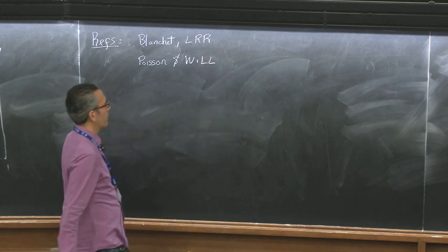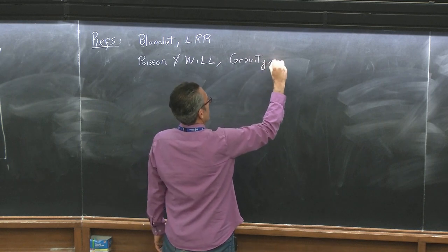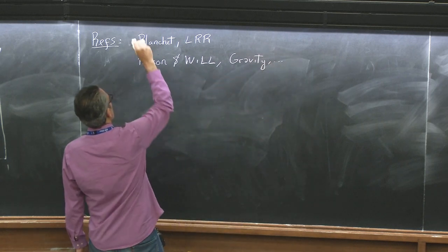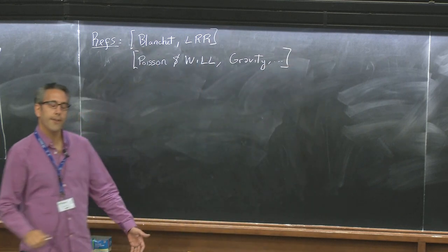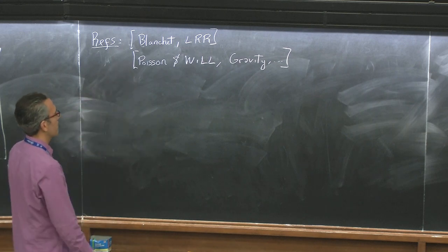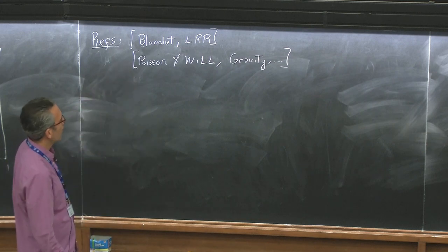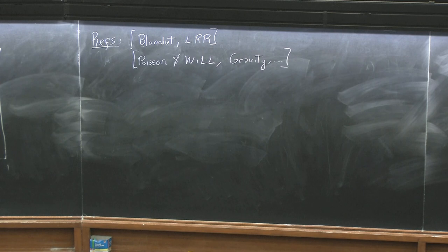There's a book by Poisson and Will called 'Gravity' that you can also use. What's nice about this book is that it provides all of the gory details, up to formal 1 post-Newtonian or 1 PM order. There is also a textbook by Maggiore, who introduces some of these concepts at an even lower level. So those are your references.